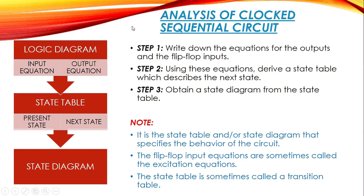For the analysis of a clocked sequential circuit, we follow three main steps. Step one is to write down the equations for the output and the flip-flop inputs. According to the given figure, we first find the inputs and outputs from the circuit diagram, then form Boolean expressions or equations. From the logic diagram, we find the input equation and the output equation.